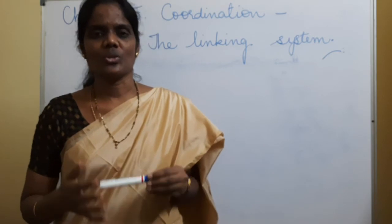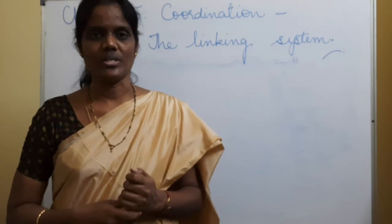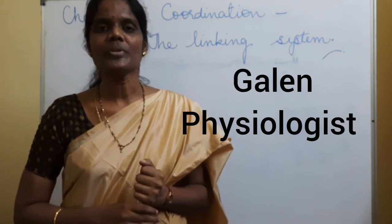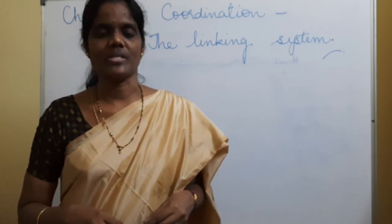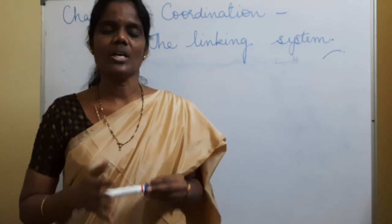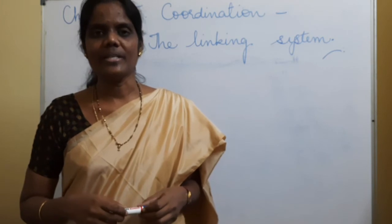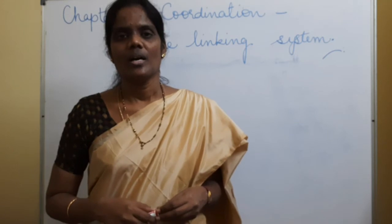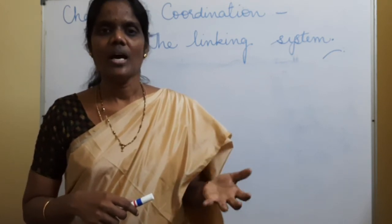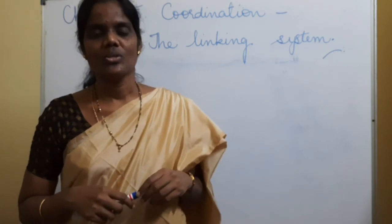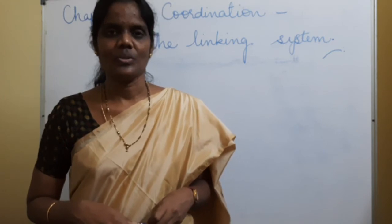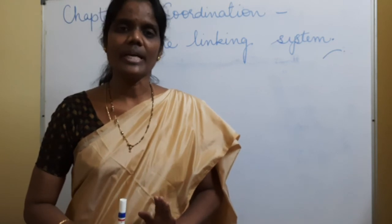Earlier it was thought that only the brain performed all these functions. But a Greek physiologist called Galen, whose work on the brain and the nervous system, later led to various developments. These developments tell us that there is a nervous system along with the brain. Galen discovered this because a patient came to him with a blow on his neck, and after the blow, the patient lost only the sensation in his hand but could move his hand perfectly well. From this, Galen thought that there might be nerves for sensation and nerves for action — apart from the brain, there is a nervous system with different types of nerves.